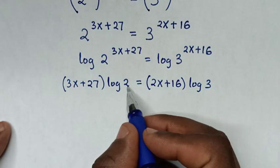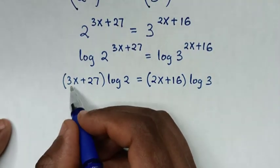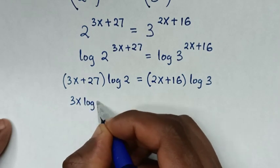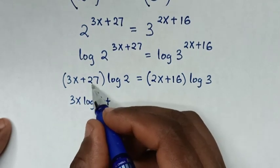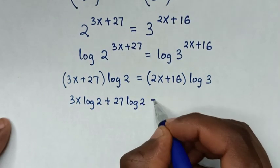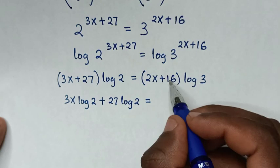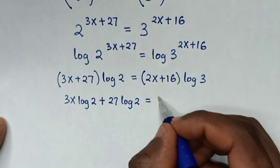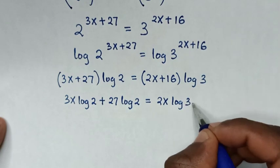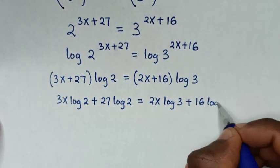Then we will multiply log of 2 inside the bracket, so it will be 3x log of 2 plus 27 log of 2 is equal to — also here we multiply log of 3 inside the bracket — so it will be 2x log of 3 plus 16 log of 3.